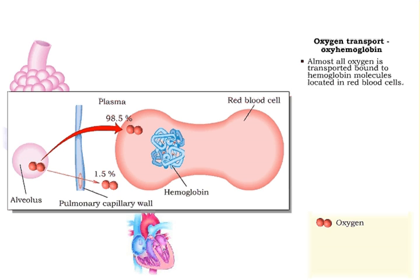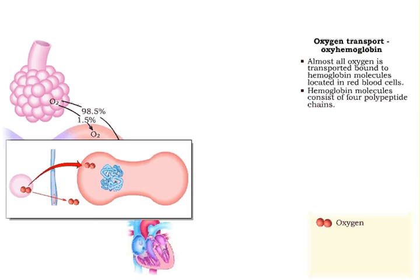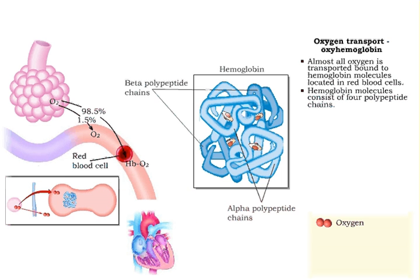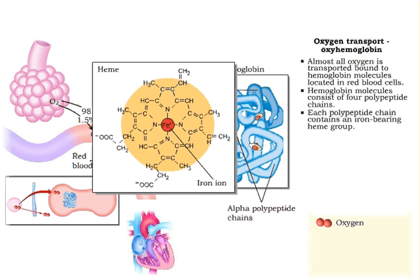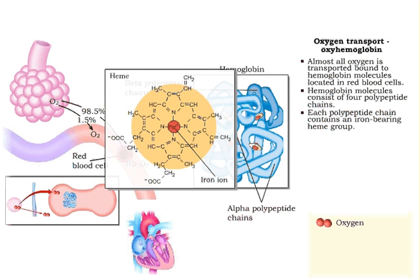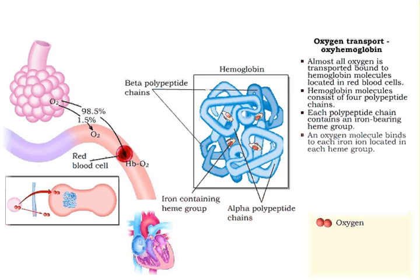Almost all oxygen is transported bound to hemoglobin molecules located in red blood cells. Hemoglobin molecules consist of four polypeptide chains, and each polypeptide chain contains an iron-bearing heme group. An oxygen molecule binds to each iron ion located in each heme group.